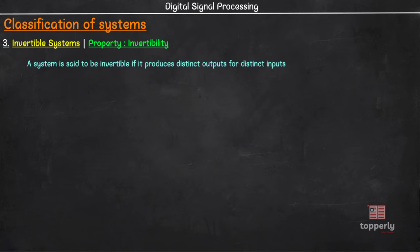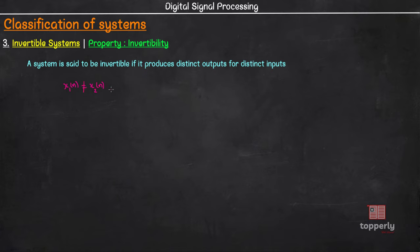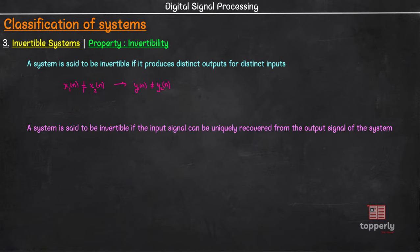The definition of an invertible system is simple. A system is said to be invertible if it produces distinct output signals for distinct input signals. In other words, given two input signals x1 and x2, if x1 is not equal to x2, then it must be true that y1[n] is not equal to y2[n], where y1[n] and y2[n] are the corresponding outputs when x1[n] and x2[n] are given as inputs. This brings us to another equivalent definition: a system is invertible if the input signal can be uniquely recovered from the output signal. Invertibility means that given the output, there is only one input signal that could have caused it.